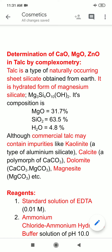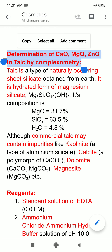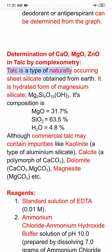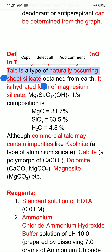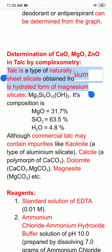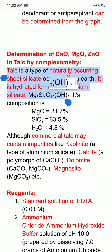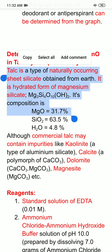Today's topic is the determination of calcium oxide, magnesium oxide, and zinc oxide in talc by complexometry. Talc is a naturally occurring sheet silicate obtained from the earth. Chemically, it is a hydrated form of magnesium silicate with formula Mg3Si4O10(OH)2, and its composition is magnesium oxide 31.7%, silica 63.5%, and water 4.8%.